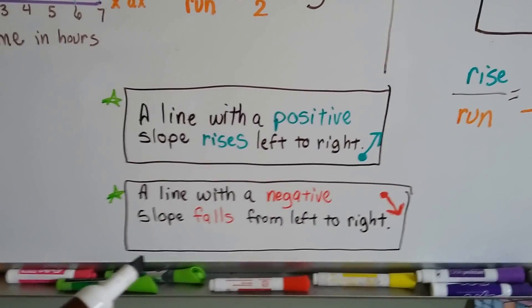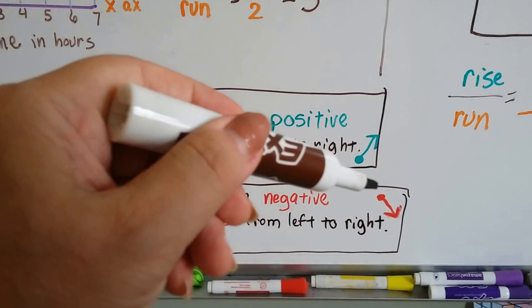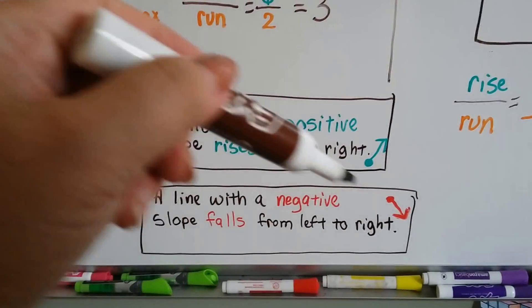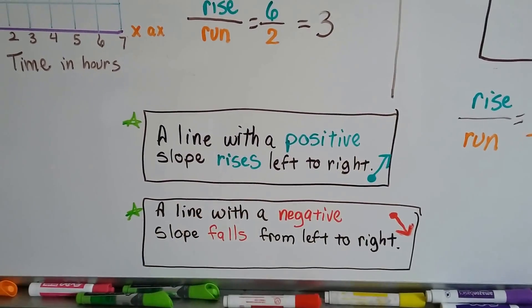And a line with a negative slope falls from left to right. It's going down to the right. So it's falling. This one's rising.